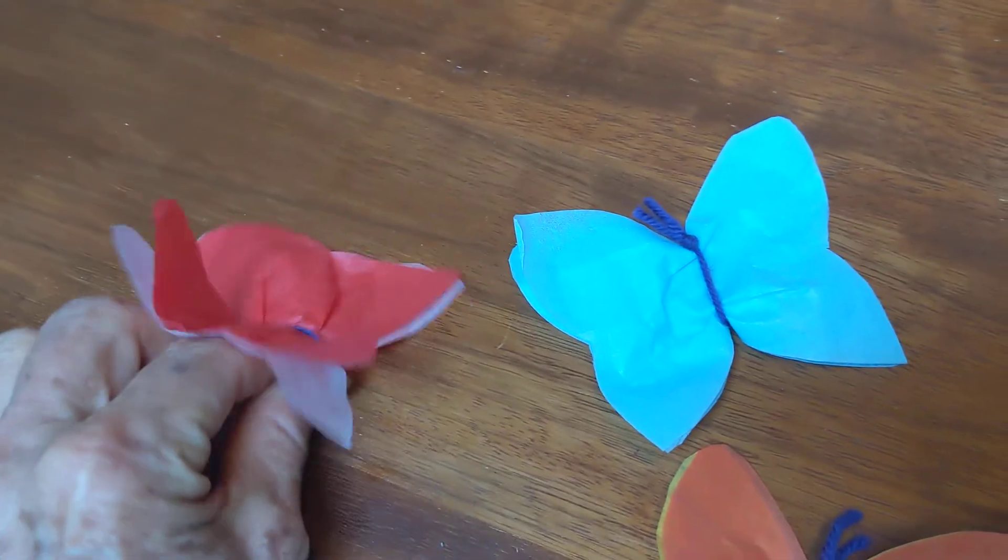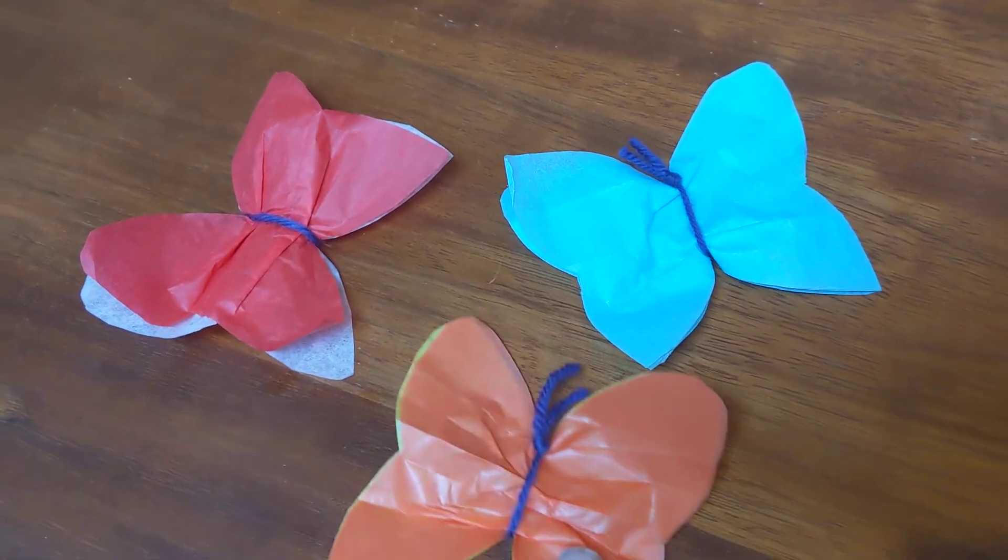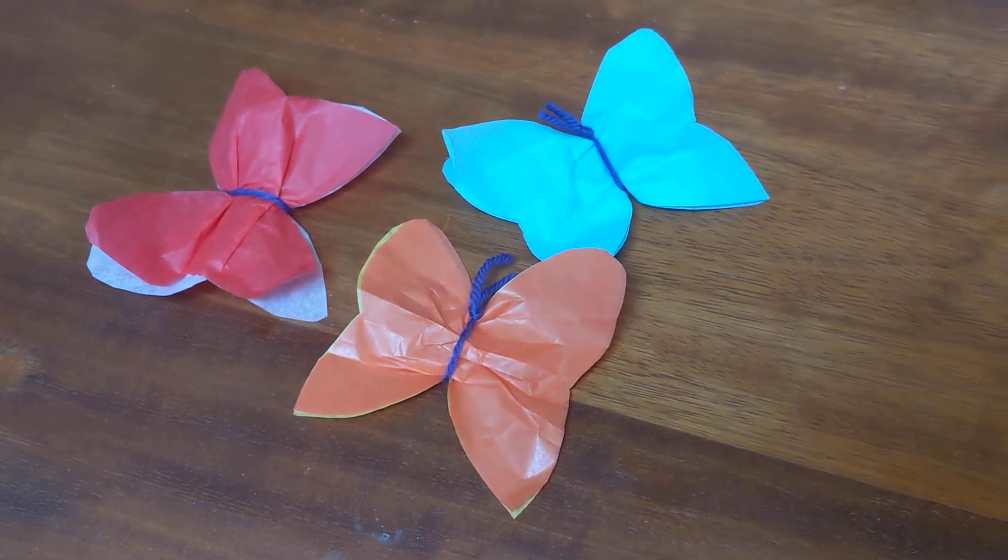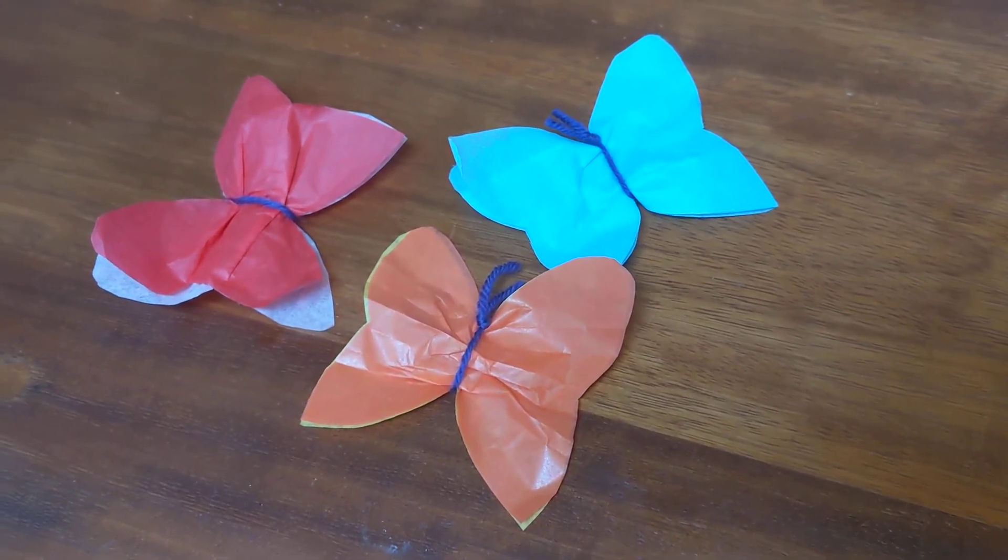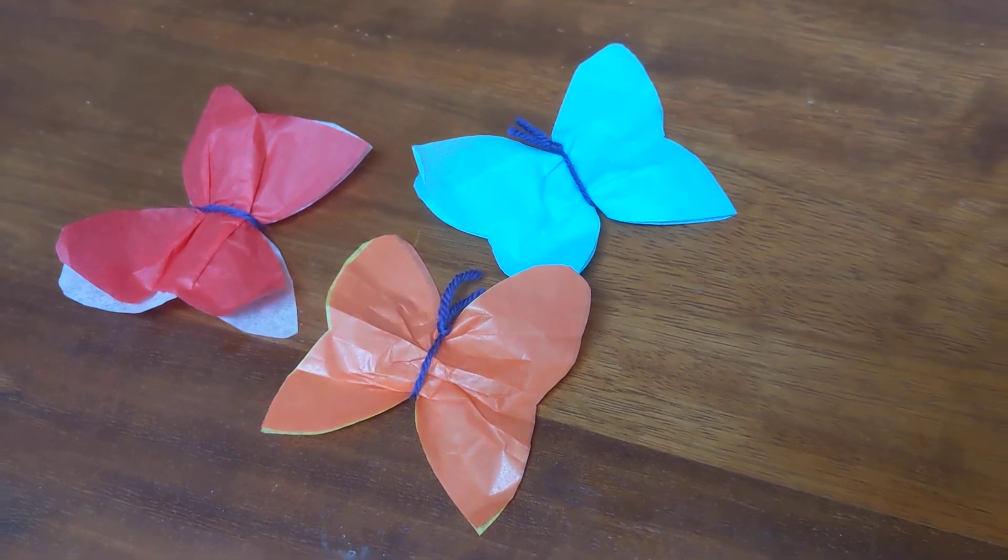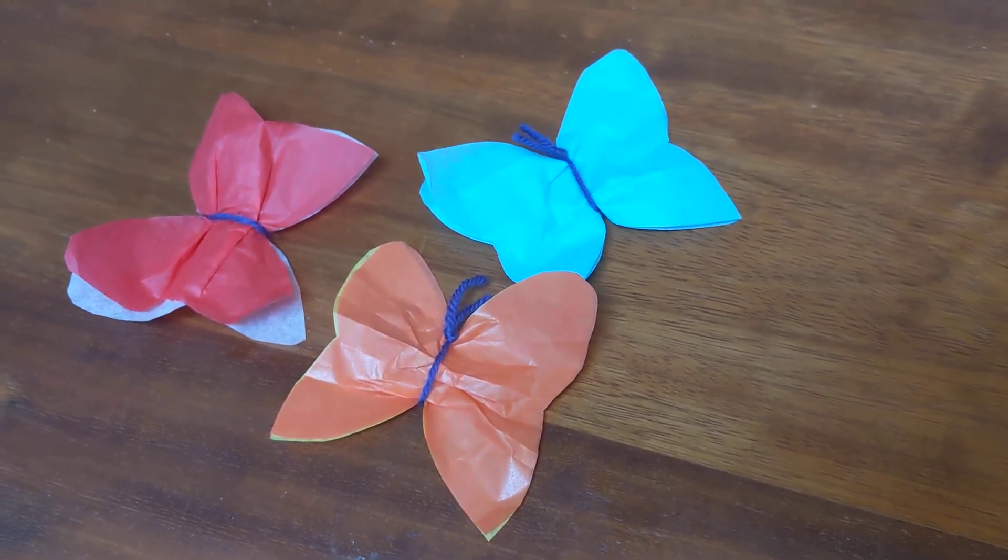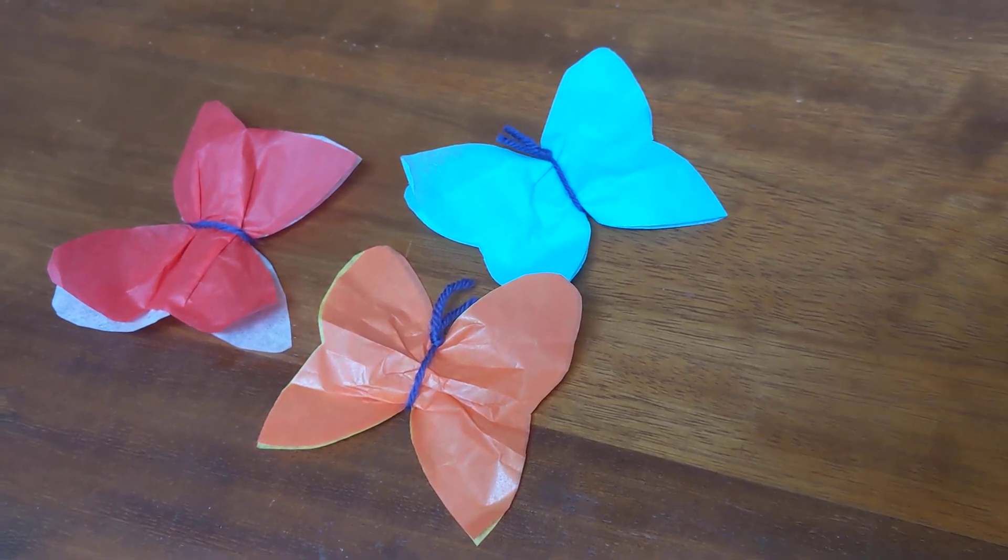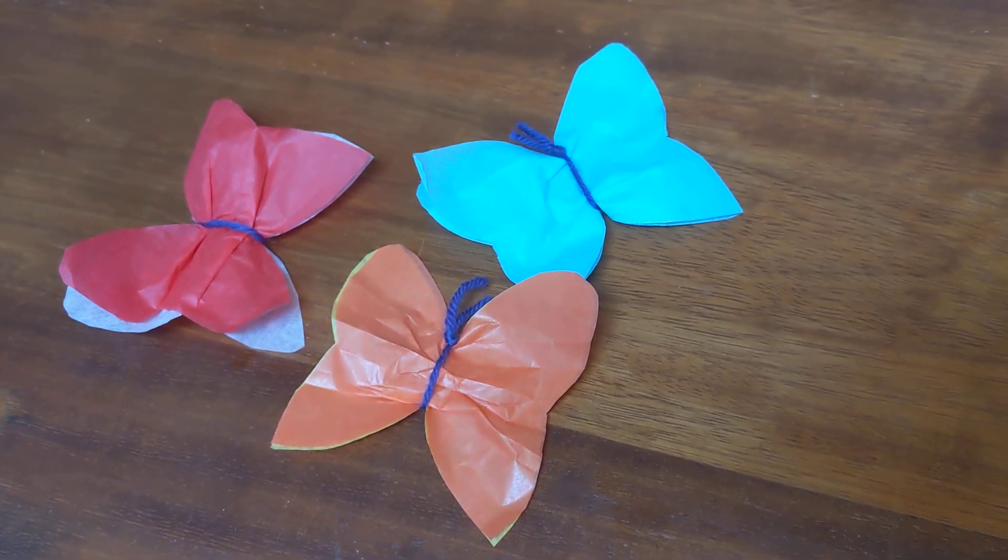You can use any color you like, any shape butterfly. These are nice because they're biodegradable with the wool and the tissue paper. Of course, you could use cardboard that you color or elastic if you wanted to. But that's basically how you make a butterfly.